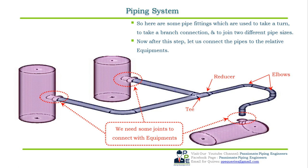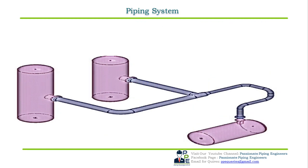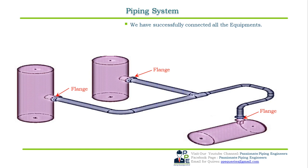A piping component that suits all these conditions — flexibility and ease of dismantling — is a flange. However, a flange cannot be used alone; it must be used with gaskets and a set of bolts. These three components together form a single flange joint assembly. After placing the flanges with gaskets and bolts, we have successfully connected our piping system to the relative equipment.